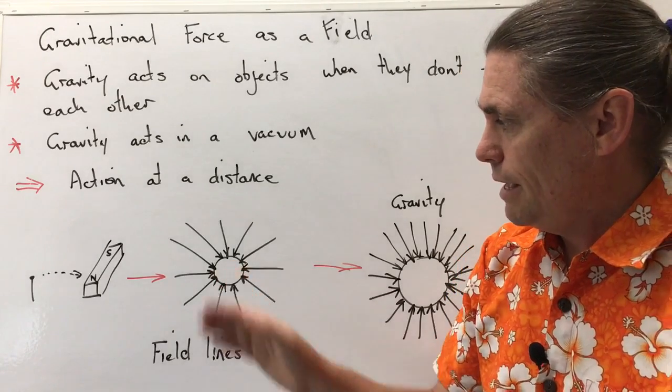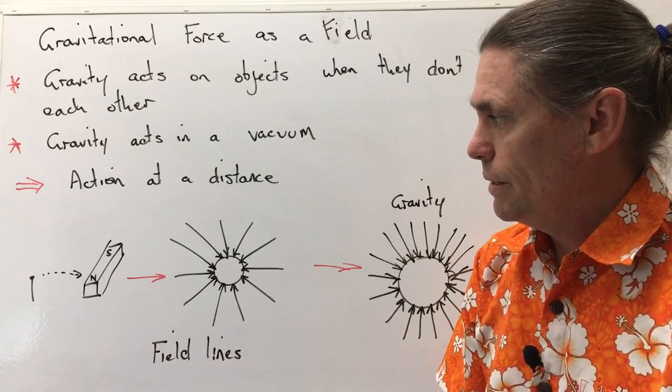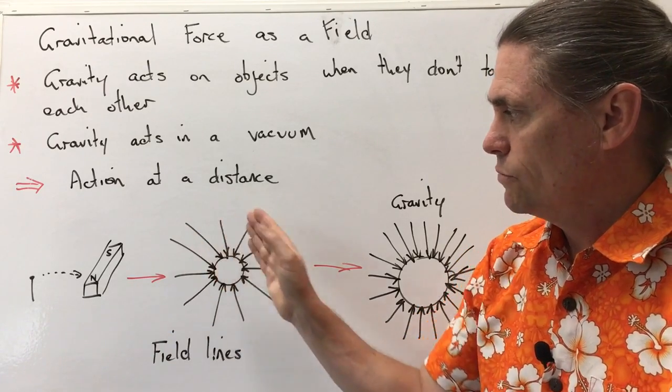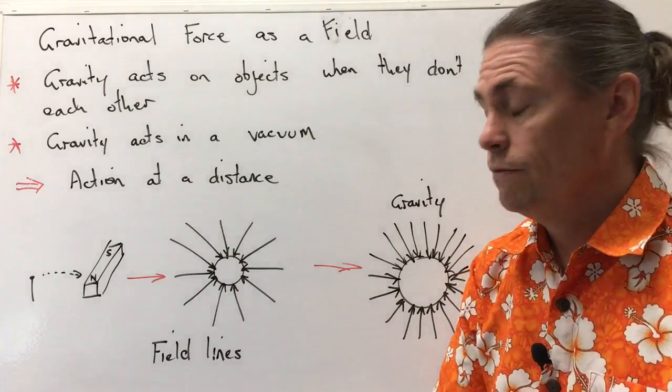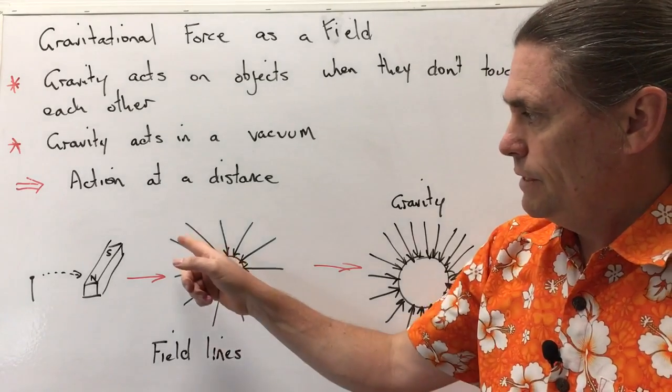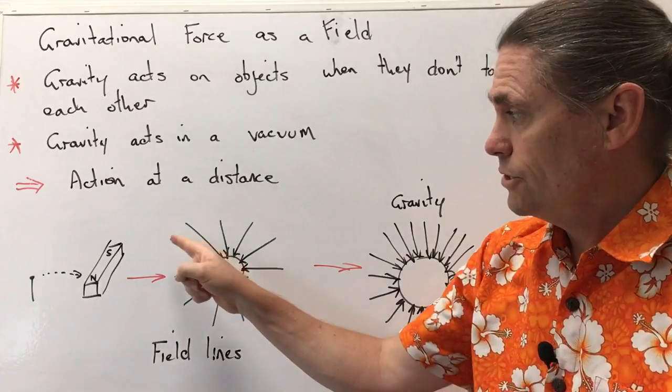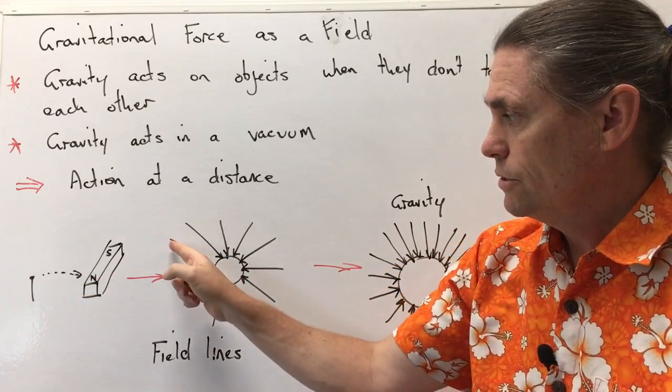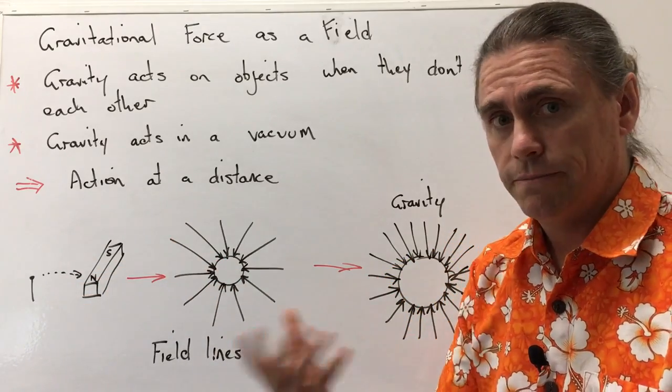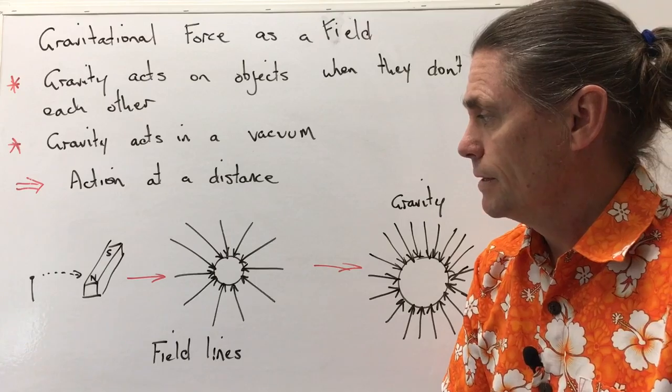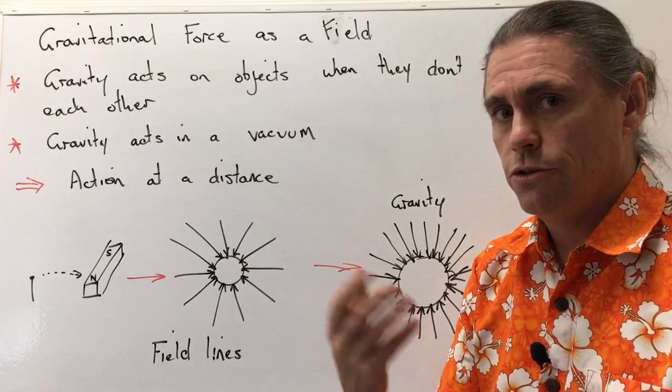So if we were looking end-on at this magnet, we could actually represent this force of attraction with a series of what we call field lines. So those field lines first of all show us direction. They're going from the object to the magnet, so they're being attracted by the magnet. Second of all, we can show the strength of those field lines by showing the number of lines that we have or the density of lines that we have.